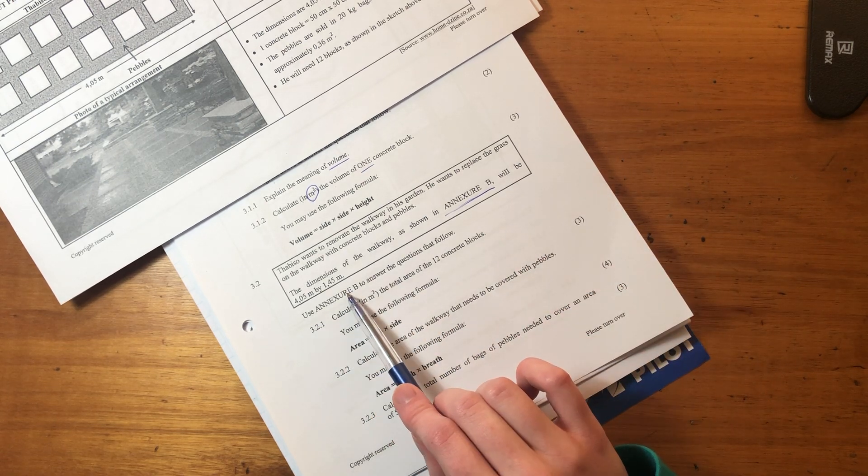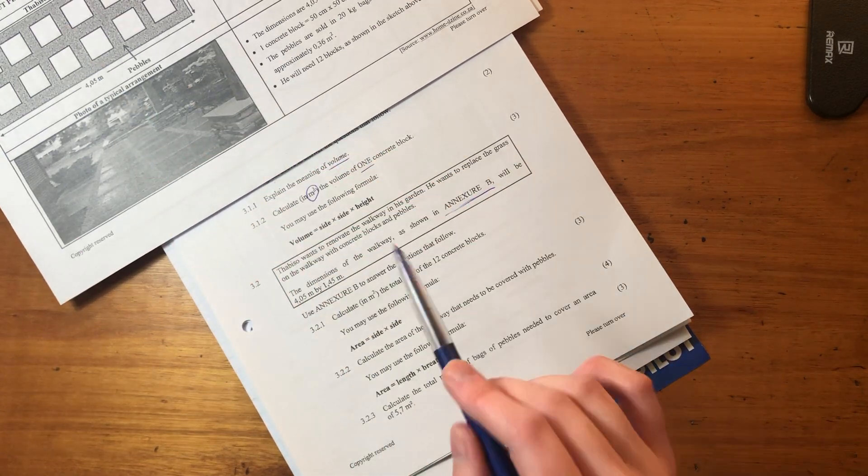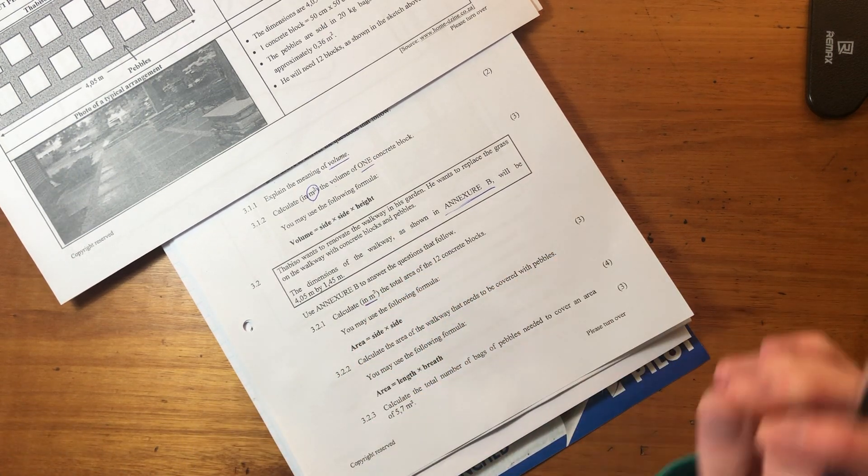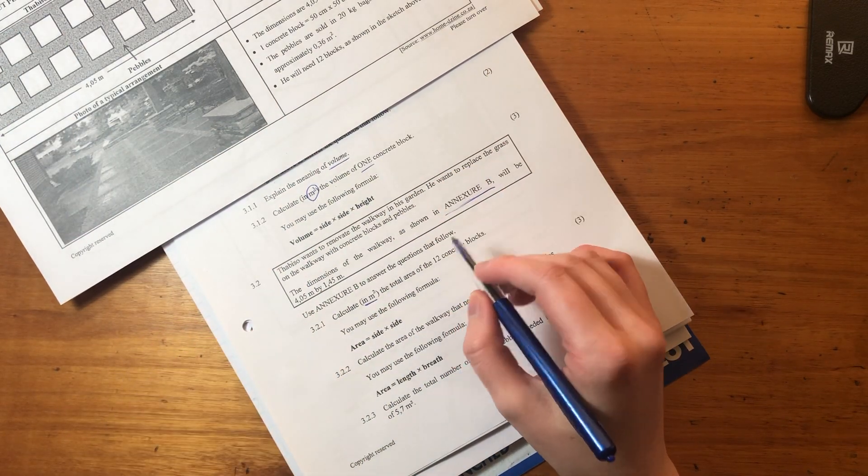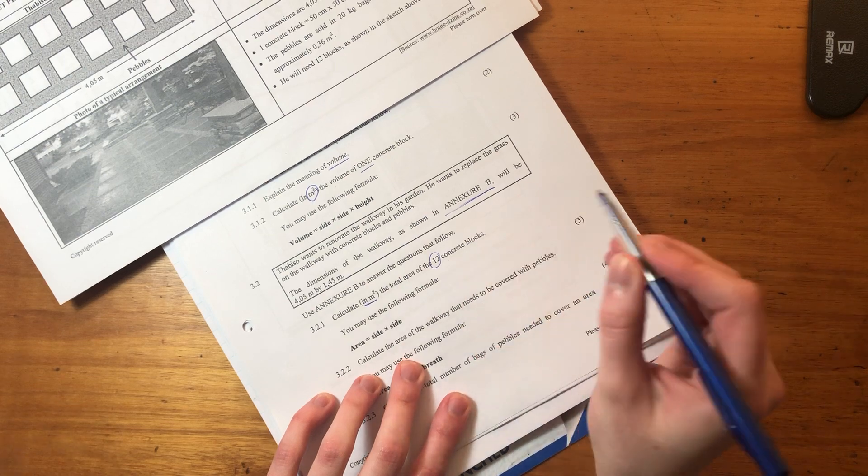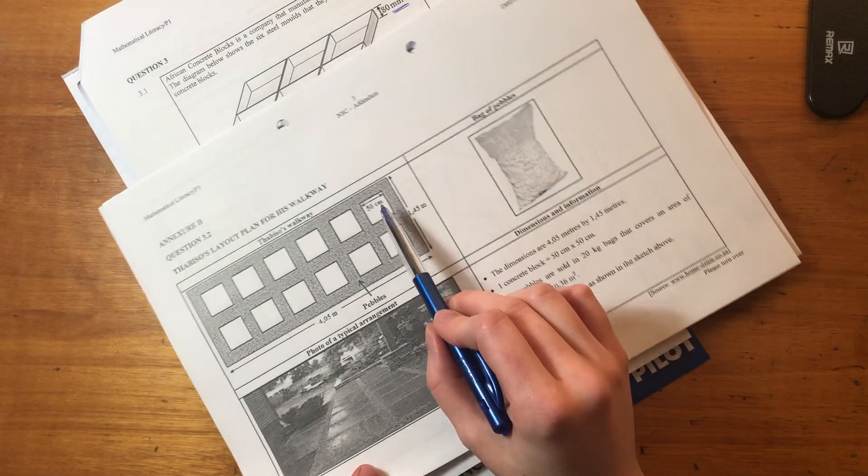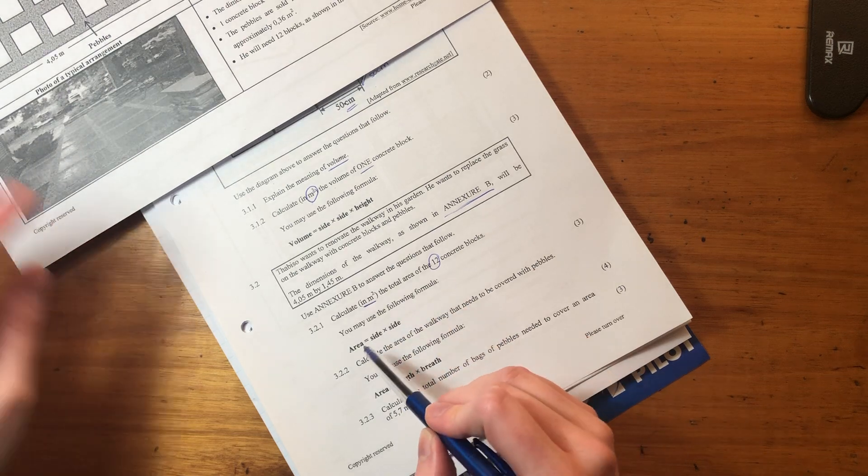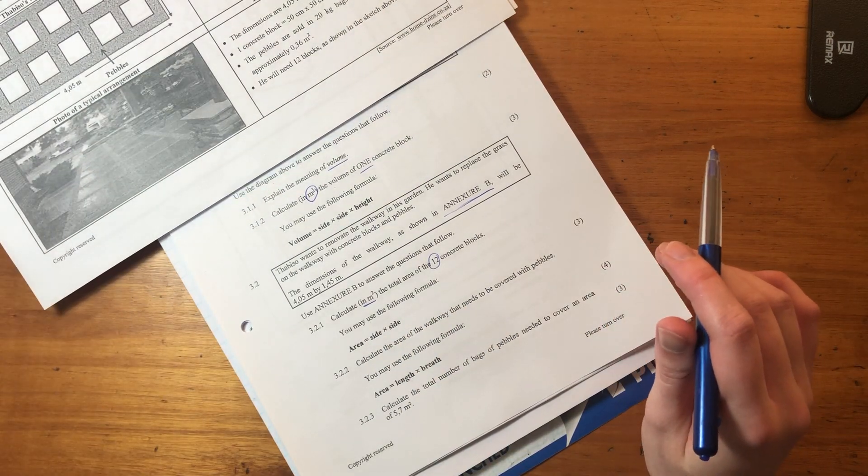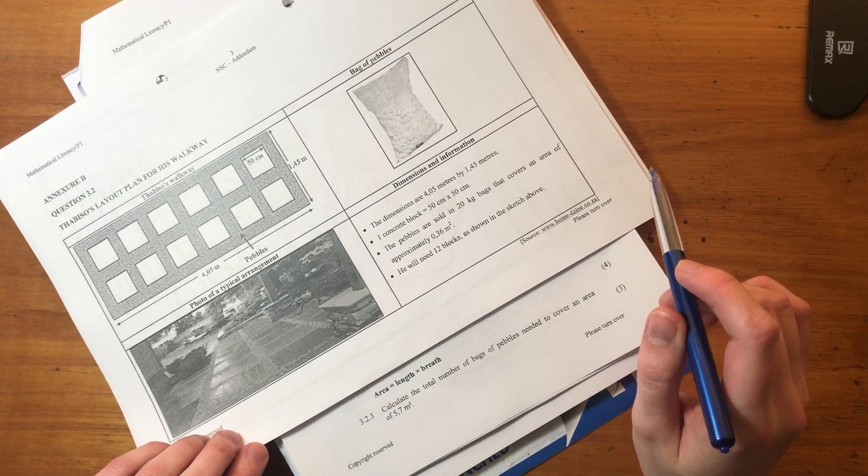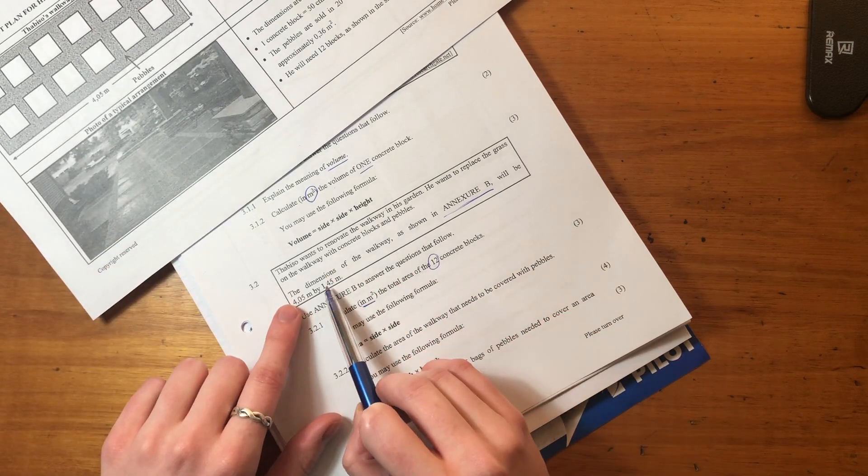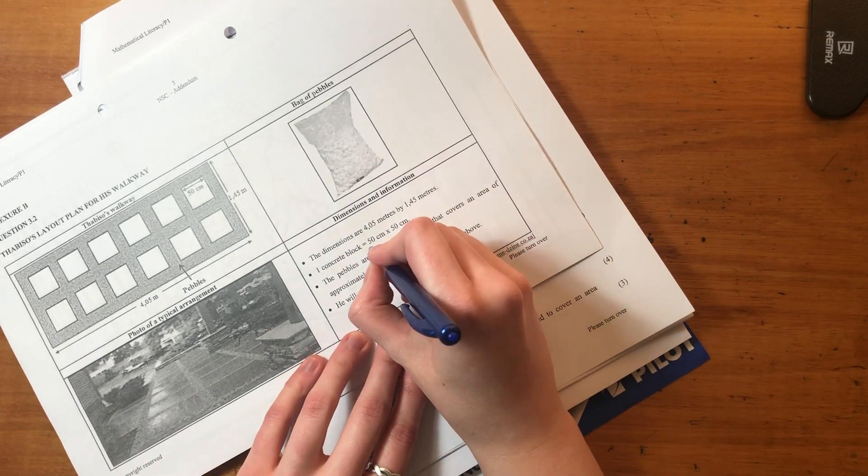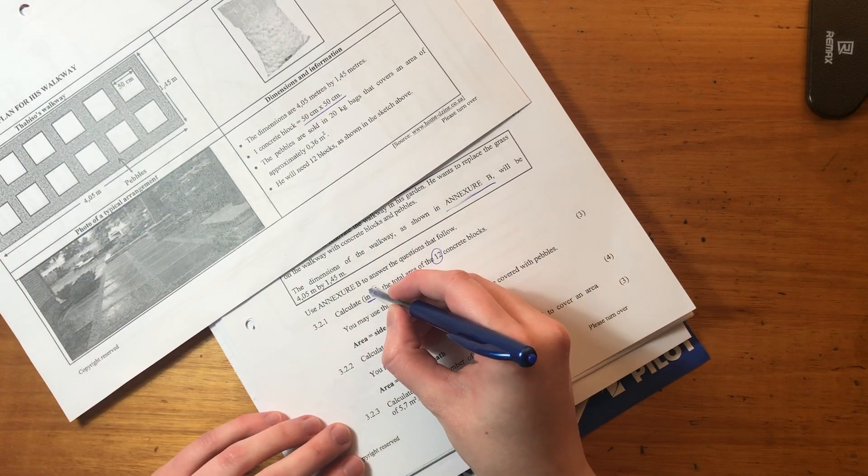Use annexure B to answer the questions that follow. Calculate in meters squared the total area of the 12 concrete blocks. So there's 12 of them. We know what we could do. Because each of these concrete blocks are the same, we could just calculate the area of one and multiply it by 12. They gave us a nice little formula. The concrete blocks from what I'm seeing are perfect squares. They've given us 50 centimeters by 50 centimeters.